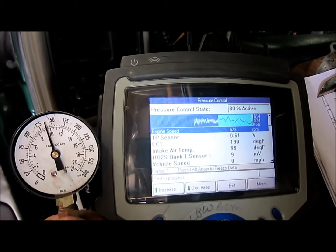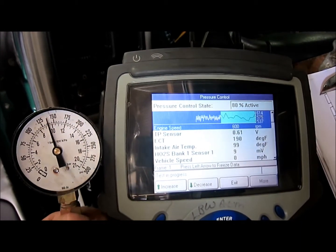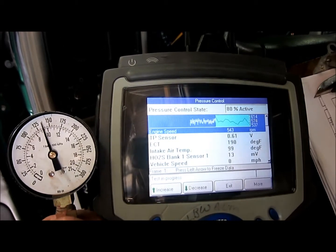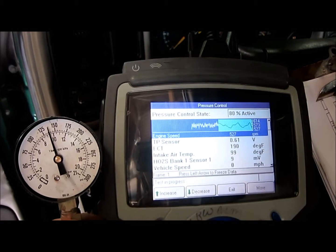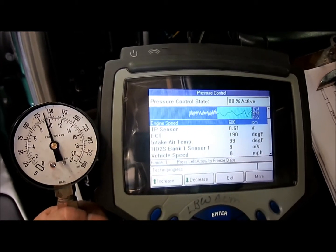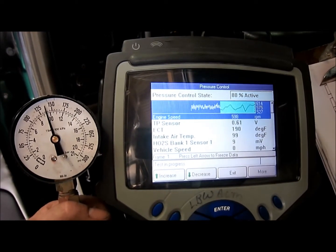Now if you disconnected the power going to that solenoid like the wire got cut, it would be like it was 0% active and the pressure would be really high to protect the transmission. Okay. That's what that's all about.